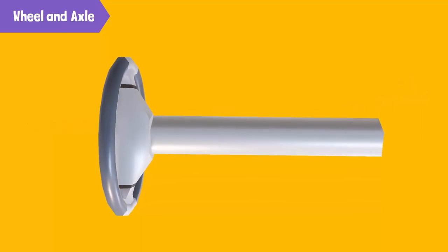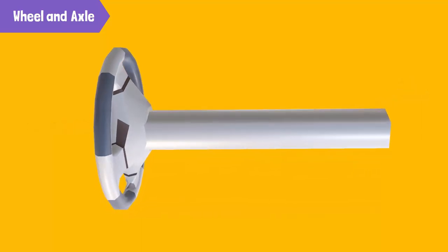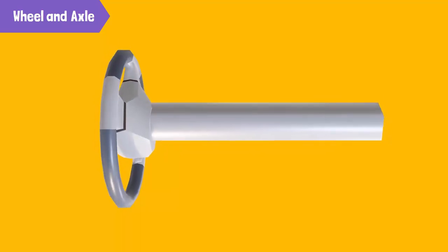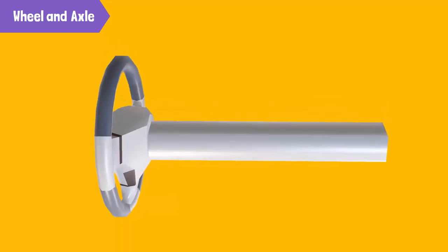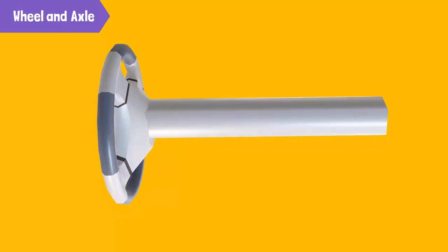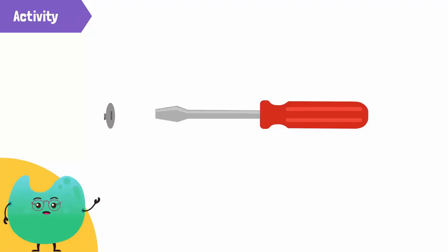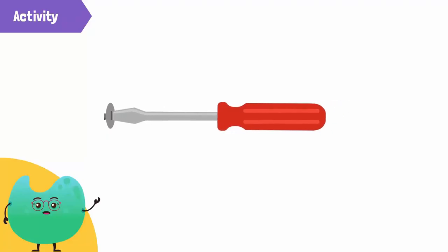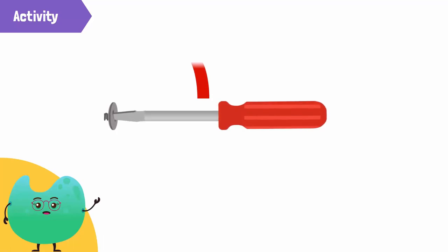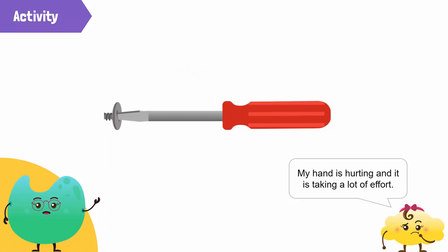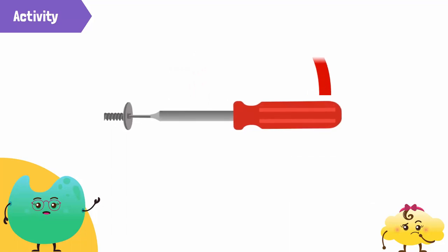Moving the wheel results in movement of the axle and vice versa. Before we learn about the wheel and axle, let's perform a simple experiment. Take a screwdriver and try to open a screw by turning its shaft. Is it working? Now, open the same screw by turning the screwdriver by its handle.